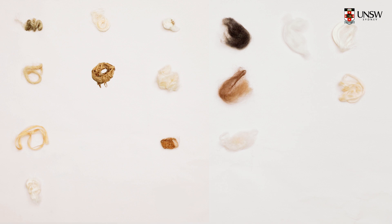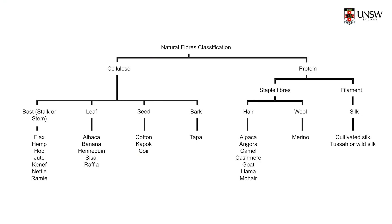If you know these basic categories of cellulose and protein, you can choose all sorts of process methods to suit — like which kind of dye processes to use. And those are the sorts of things you'll learn in the textile workshop here at Art and Design.